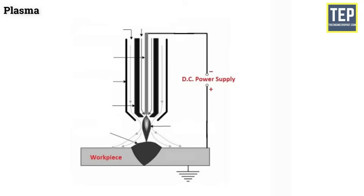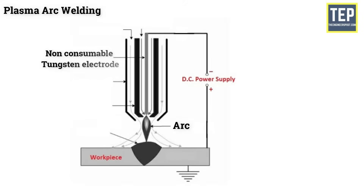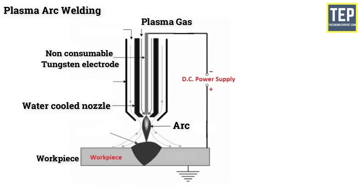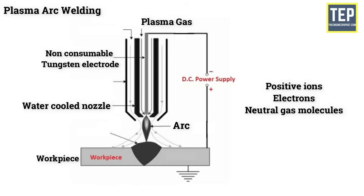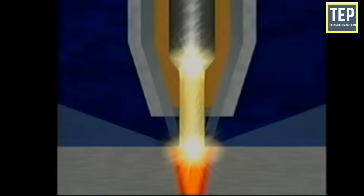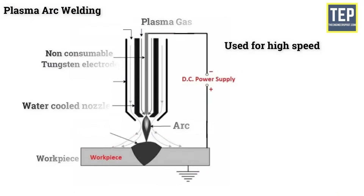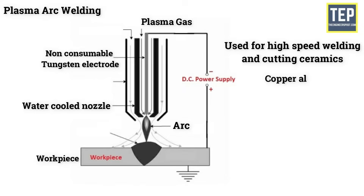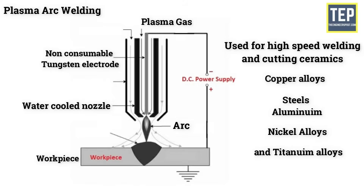Plasma arc welding is an arc welding process utilizing heat generated by a compressed arc between a tungsten non-consumable electrode and a workpiece or water-cooled constricting nozzle. The plasma is a gaseous mix of positive ions, electrons, and neutral gas molecules. The transferred arc process creates plasma jets of high energy density and can be used for high-speed welding and cutting of ceramics, copper alloys, steels, aluminum, nickel alloys, and titanium alloys.